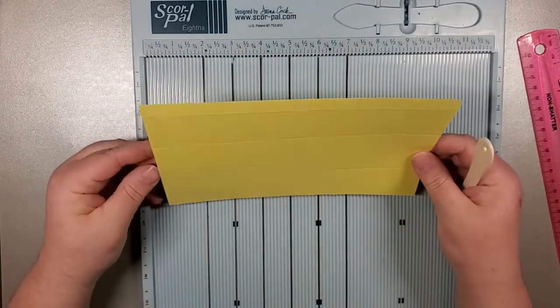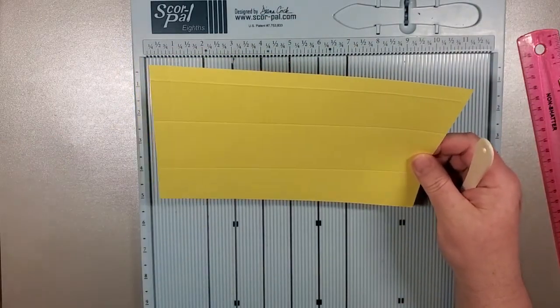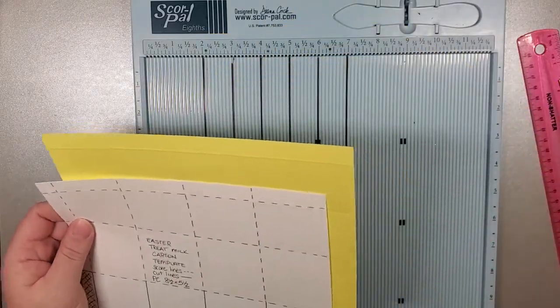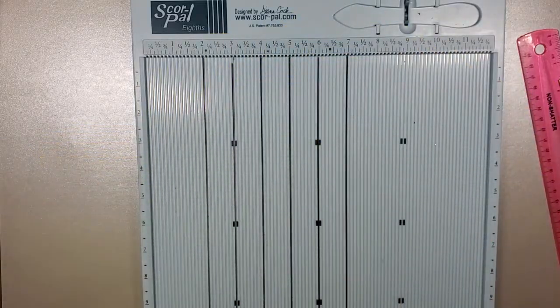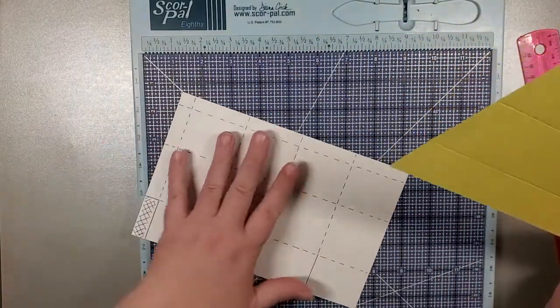We are going to flip this around like so, and we are going to score it at five. Okay, so now we have our scoring. I'm going to bring back, actually let me just grab my mat, and then I can lay down our template.